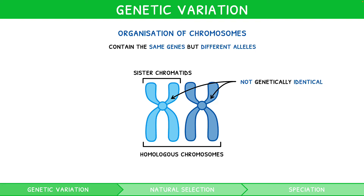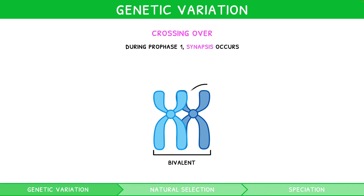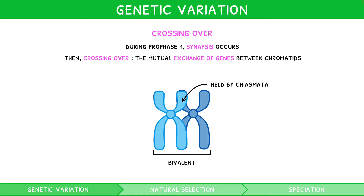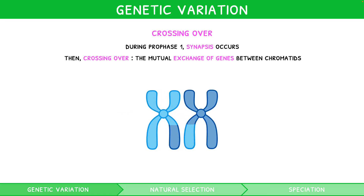Let's start by discussing crossing over. During prophase 1, homologous chromosomes are paired up by a process known as synapsis to create bivalents, held by chiasmata. Soon after synapsis, crossing over occurs. It is the mutual exchange of genes between chromatids from adjacent homologous chromosomes within a bivalent. A junction is created where a chromatid breaks and rejoins with another chromatid from the adjacent homologous chromosome in the bivalent. Junctions occur at random positions along the chromatid, but at the same place on the chromatids involved, to ensure mutual exchange of genes. This produces chromosomes with new combinations of alleles, therefore resulting in genetic diversity.